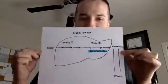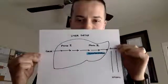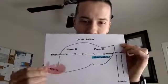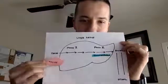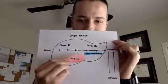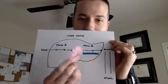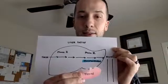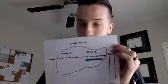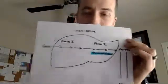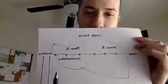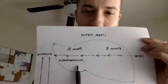To understand how this works, we need to look at Phase 2 of liver detoxification. Let's say we have a toxin being processed through the liver — it makes its way through Phase 1, and then in Phase 2, the body needs to detoxify that toxin or hormone through a process called glucuronidation.